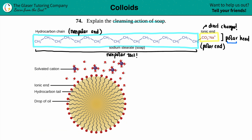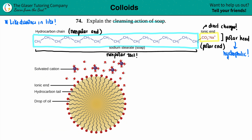If the head is polar, like dissolves in like, so this portion of your soap would want to be with other polar molecules. And what is the most famous polar solvent of all time? Water. This is called hydrophilic — hydrophilic means that it loves water. It wants to be so close to water because water is polar — like dissolves in like. So this polar head is like, 'I want to be so close to water, please.'